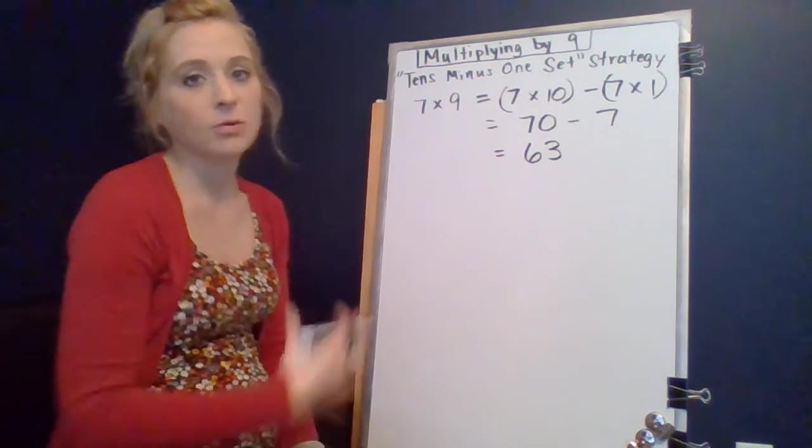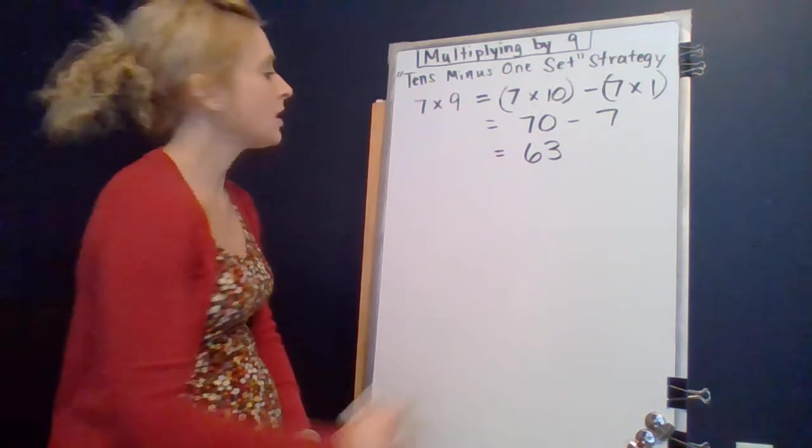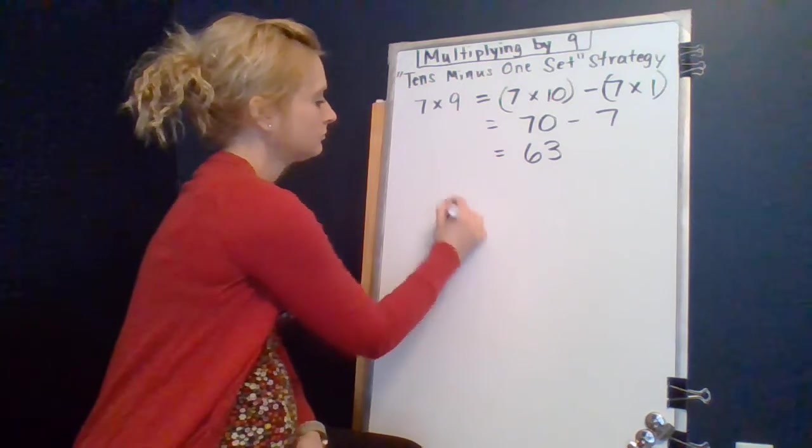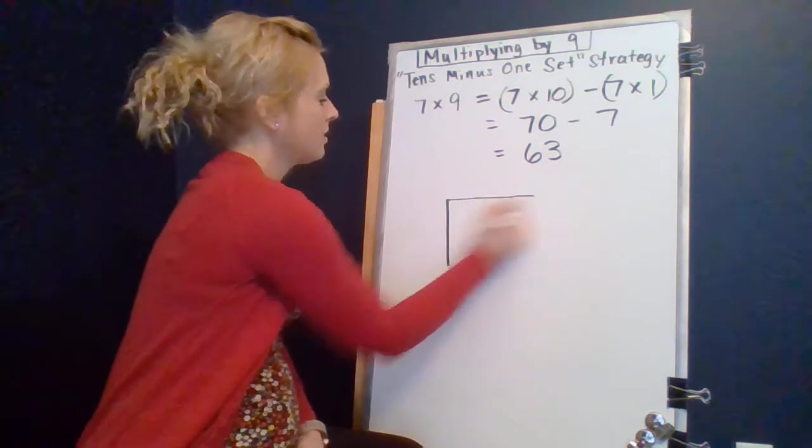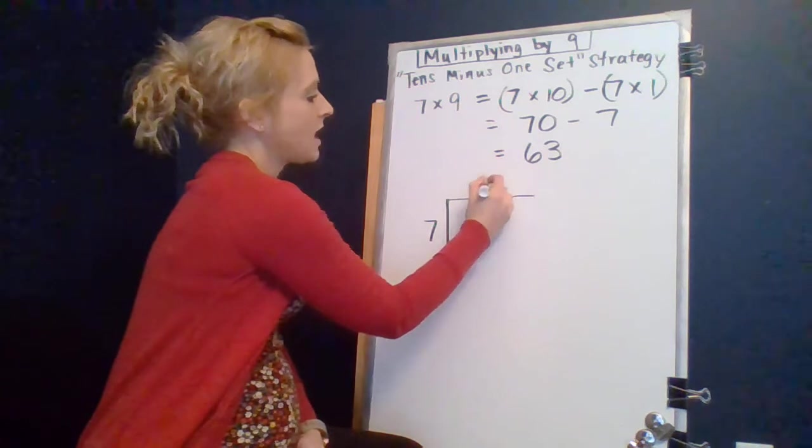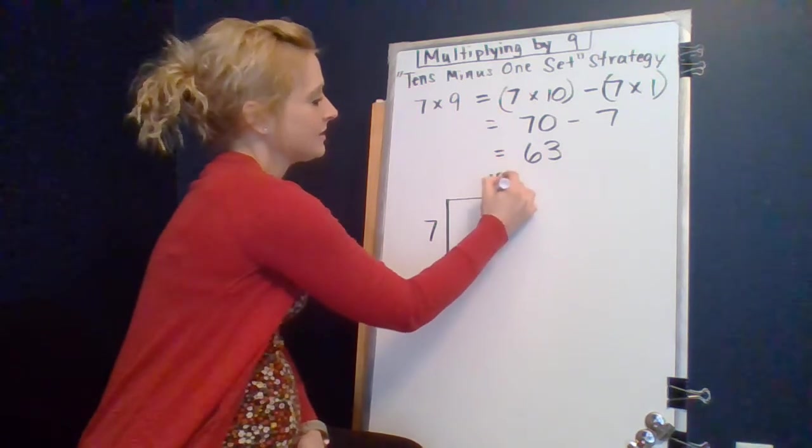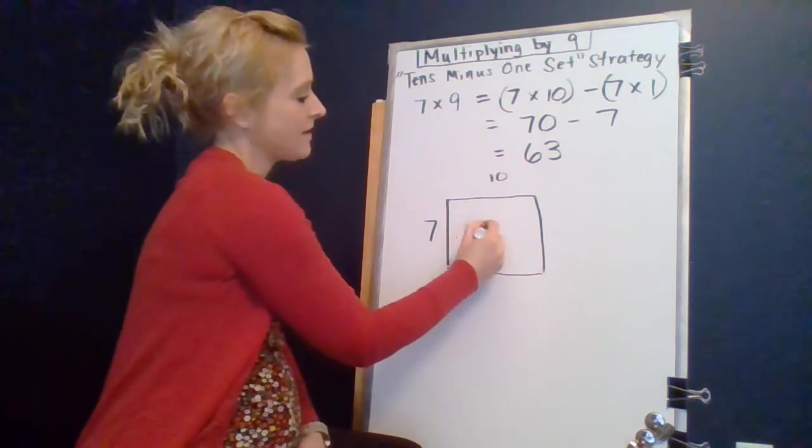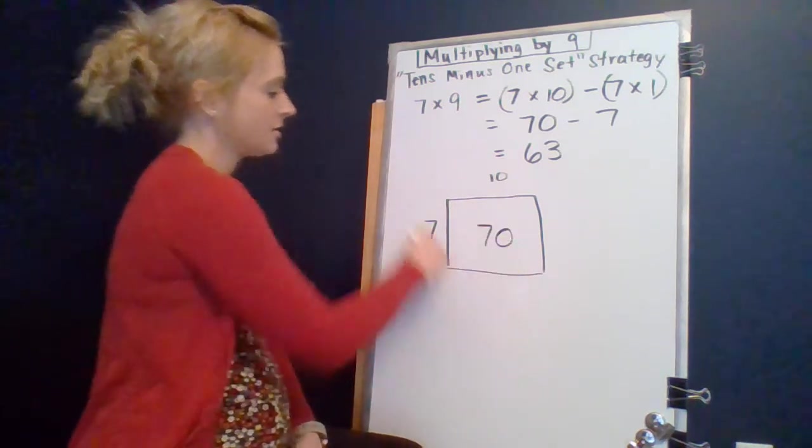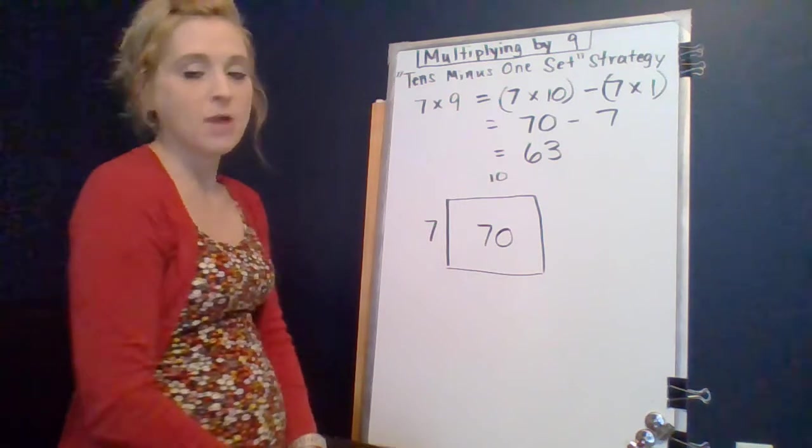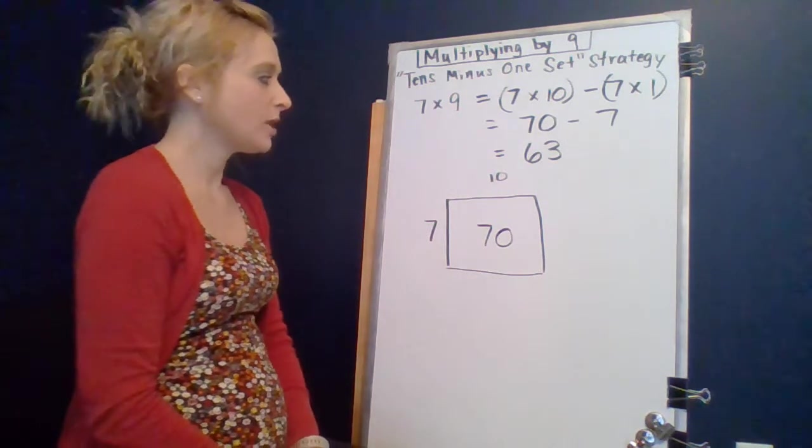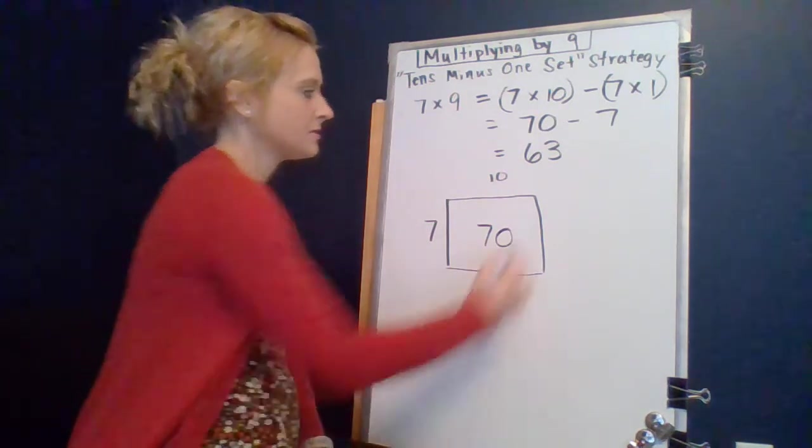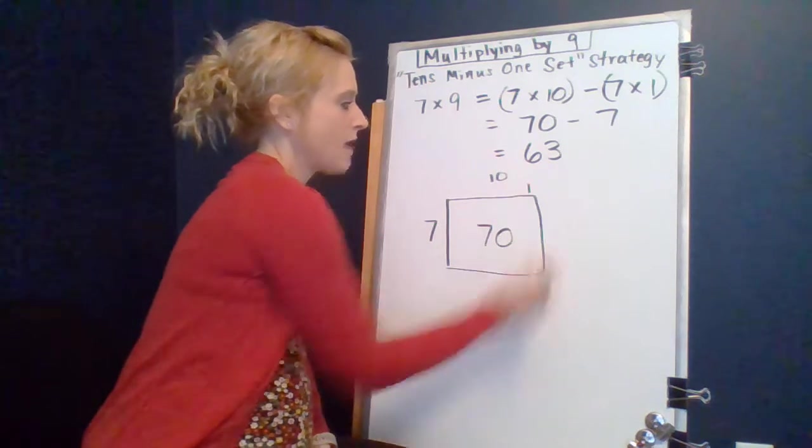So what does that look like if we were modeling it visually with an area model? My area model started, so we would have seven times ten is what we're thinking about. And we know all together that that is seventy inside of there. Seven times ten is seventy. But we are then removing a group.